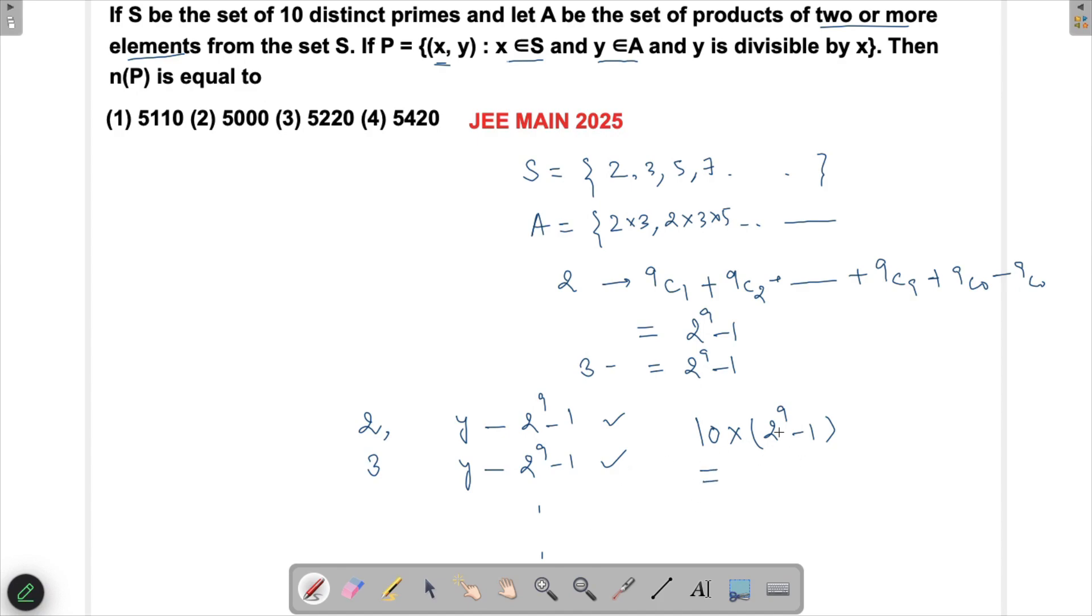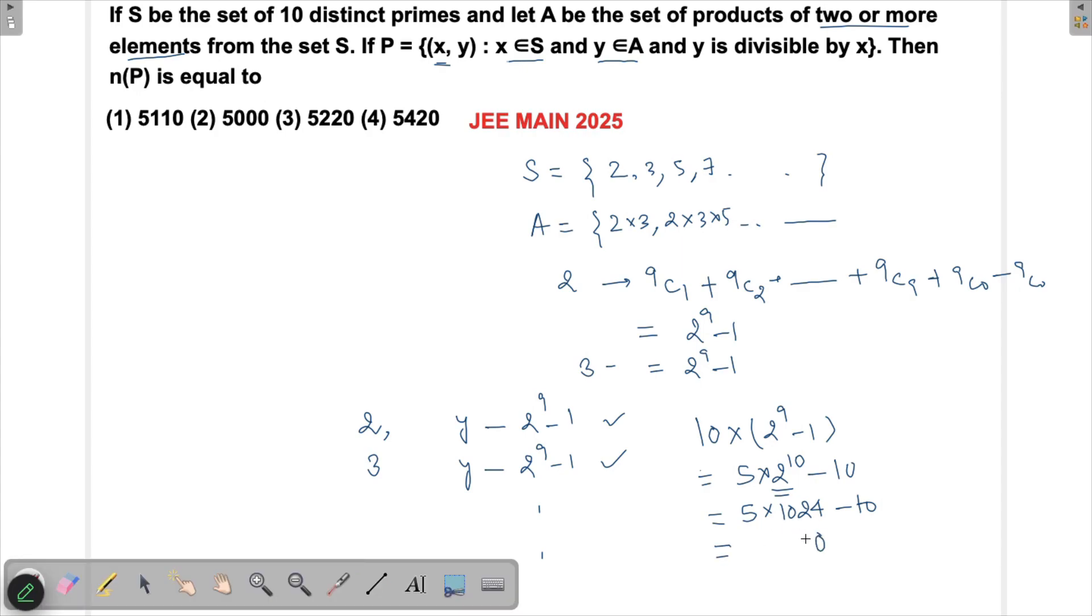Now this equals 5 × 2^10 - 10. And 2^10 would be 1024, like 1 GB in bytes. So this is 5 × 1024 - 10 = 5120 - 10 = 5110. This is the answer.